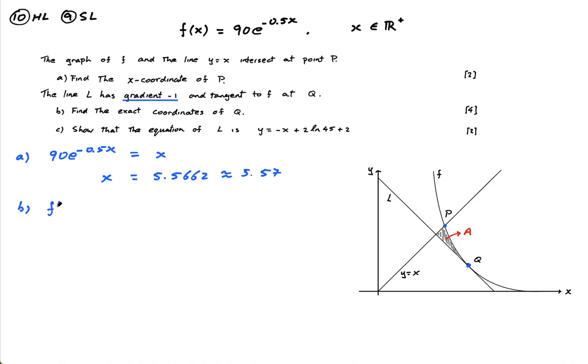So if I differentiate this, let's do that right now. f'(x) is equal to, well because it's e, it's going to be 90e to the minus 0.5x. But chain rule, you have to multiply by the derivative of this, which is times negative 0.5. And that's going to be negative 45e to the minus 0.5x.